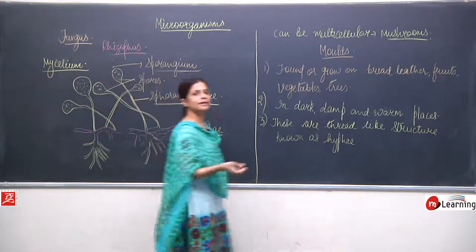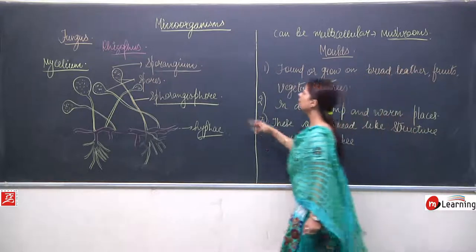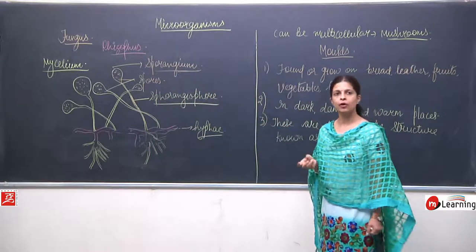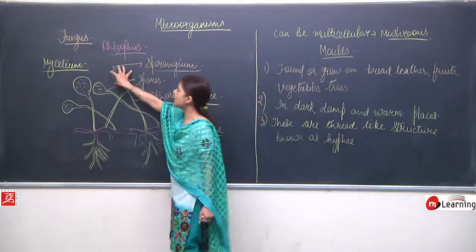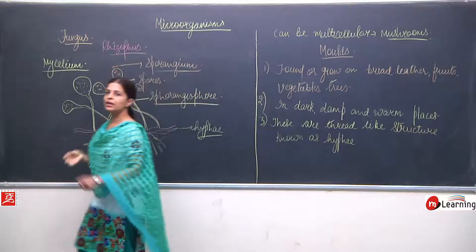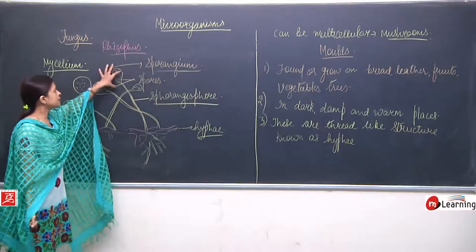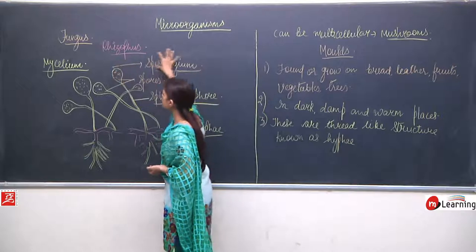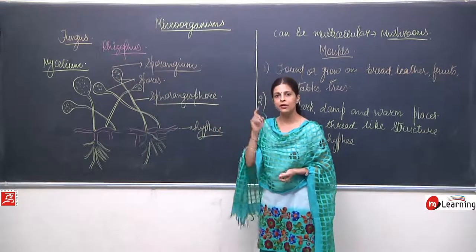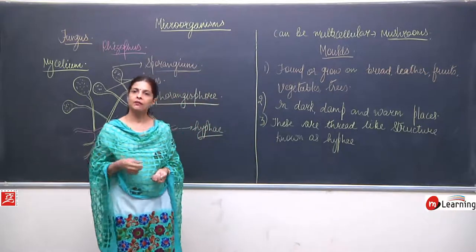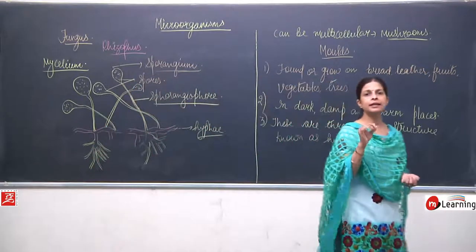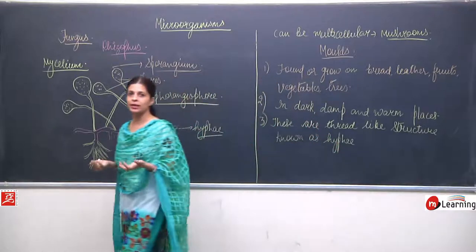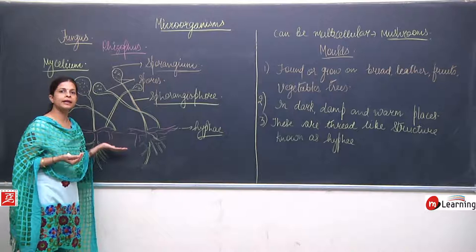Mycelium consists of the hyphae, the sporangiophore, the sporangium, and the spores. The spores are actually a means of reproduction. When the sporangium matures, it bursts and the spores get scattered. Whenever these spores get favorable conditions — a little dark, damp, and warm place with some moisture — they will start growing.